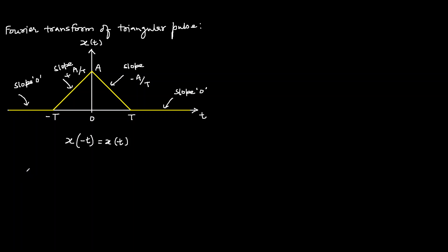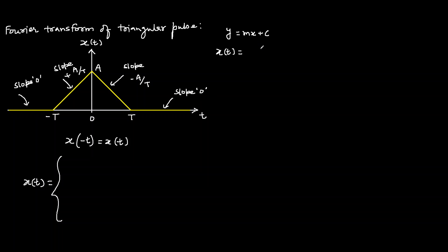Now we can write the expression for x(t), which is a combination of straight lines. To write the equation of each straight line, we use y = mx + c, where the vertical axis represents x(t), the horizontal axis represents t, m is the slope, and c is the y-intercept.